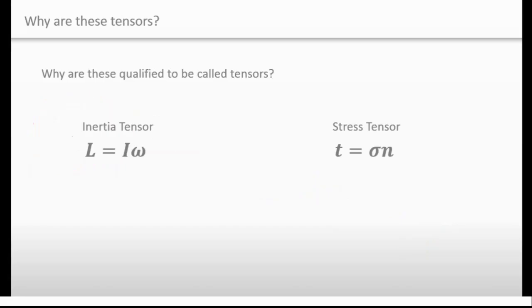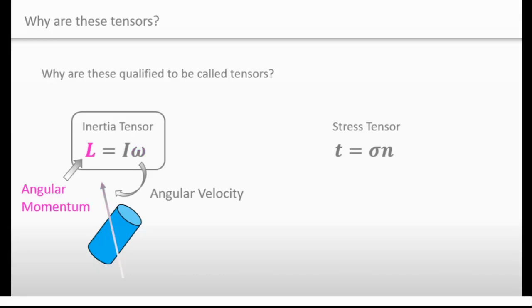Why are these called tensors? I will start with an inertia tensor. What is an inertia tensor? Here is a material. And if it has this angular velocity, the angular momentum will be this. What caused this to happen?